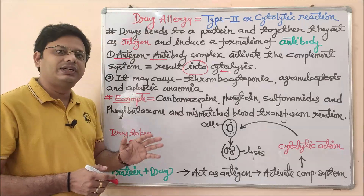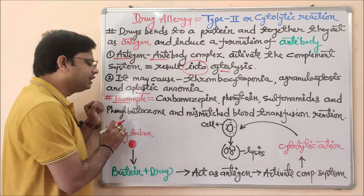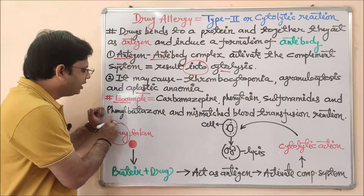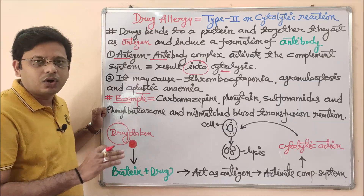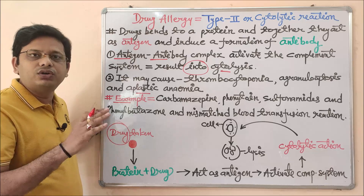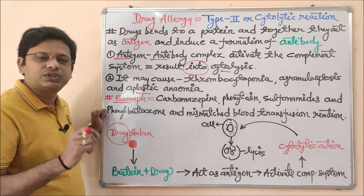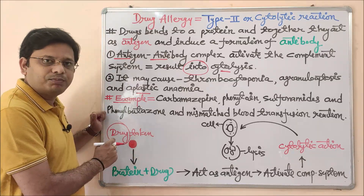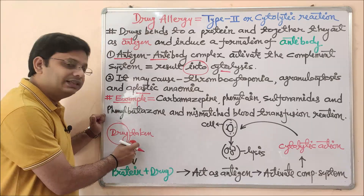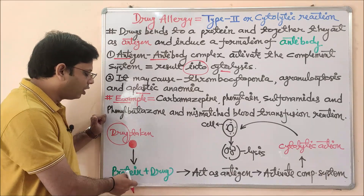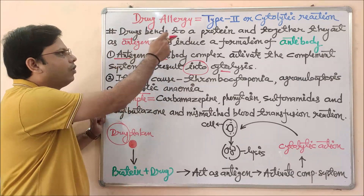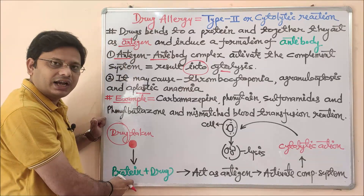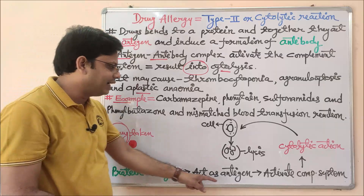Now let me explain the basic flowchart to help you better understand the concept. Whenever we take a drug that has allergic reaction potency, this drug will bind to a protein molecule, forming a protein-drug complex. This complex is considered an antigen, so it will act as an antigen.